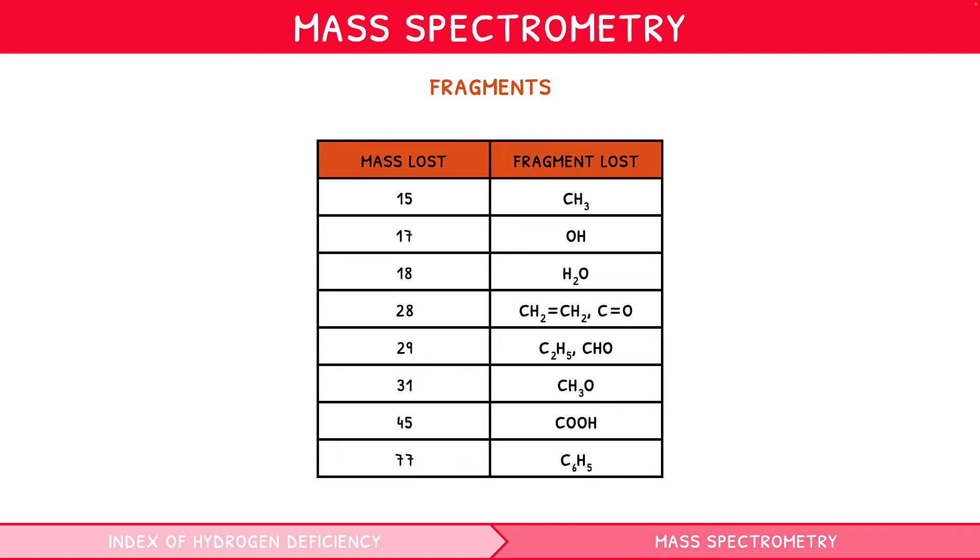These are CH3 with a mass of 15, OH in alcohols with a mass of 17, C2H5 or CHO with masses of 29, CH3O in methyl esters or ethers with a mass of 31, COOH in carboxylic acids with a mass of 45, and C6H5 plus in aromatic compounds with a mass of 77.